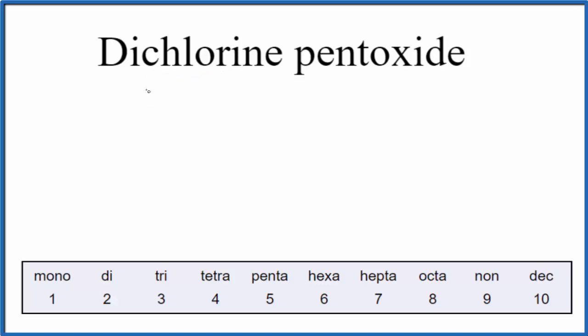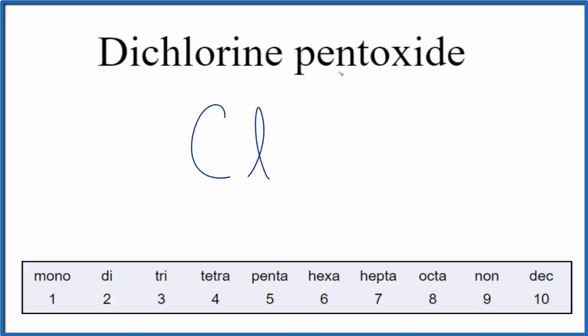We're going to use these prefixes. First, we have chlorine here, so we'll write the element symbol for chlorine as it appears on the periodic table — that's just Cl. Then oxide, that's oxygen, so we're just going to write O.